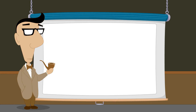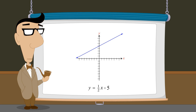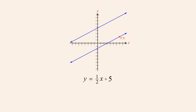Let's say that we are given the equation for a line and are asked to write a second equation for a parallel line which runs through a given point that does not lie on the y-axis. Since the two lines are parallel, we know that the slope of the second line must be the same as the slope of the first line.